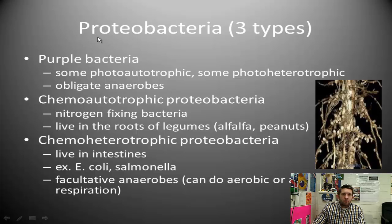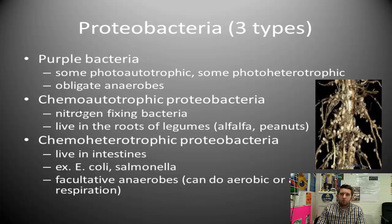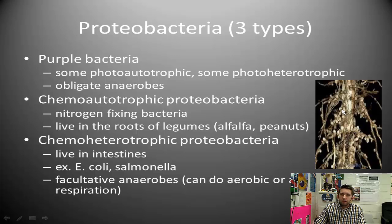Within the proteobacteria group, we have the chemoautotrophic proteobacteria. These are able to produce their own nutrients using chemicals. One very important example is nitrogen-fixing bacteria. They fix nitrogen out of the soil and air and turn it into a usable form. There's a lot of nitrogen in fertilizer because it's essential for plant metabolism. These bacteria live in little nodules in the roots of some legumes — alfalfa and peanuts, for example. They have a symbiotic relationship: they're provided housing and they pull the nitrogen out for the plants to use.